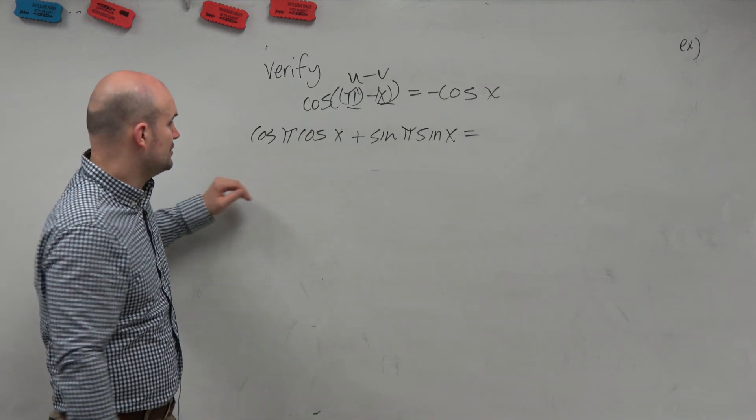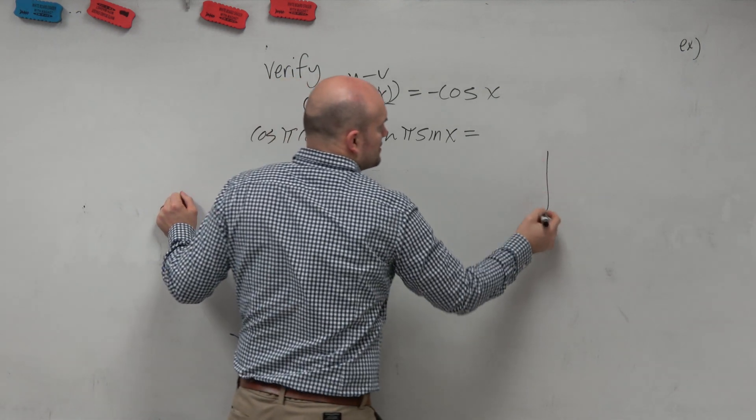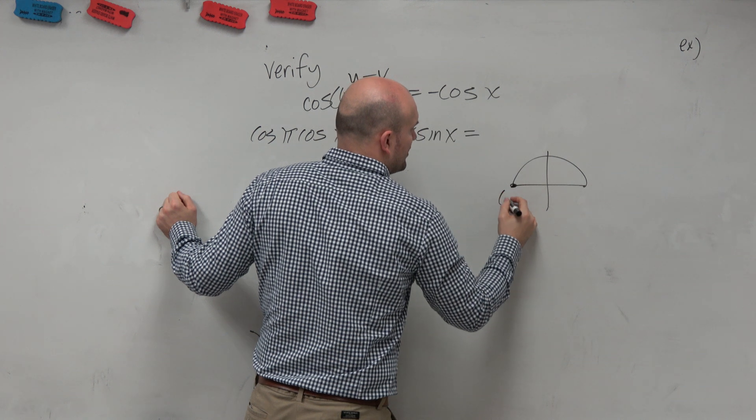Now it just goes to your unit circle. Again, we have to think of π. Where's π? Pi is over here, this coordinate point: negative 1, 0.